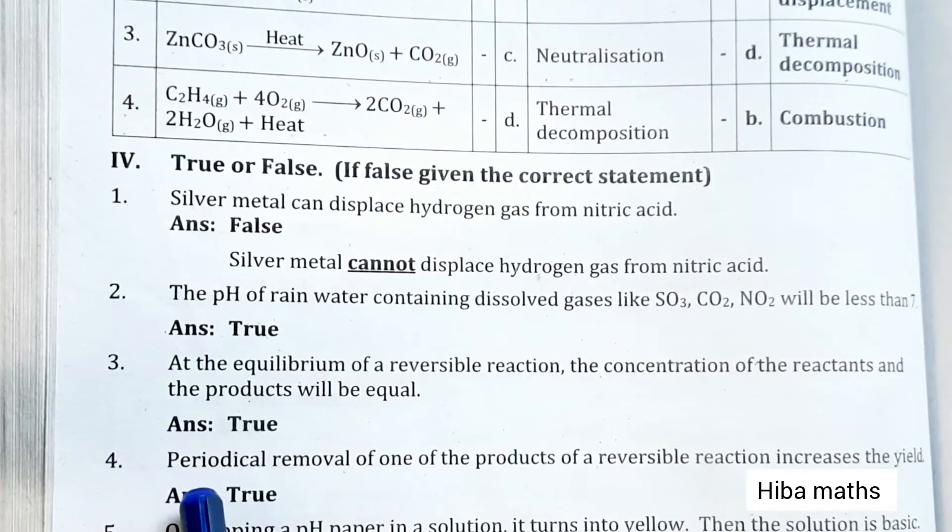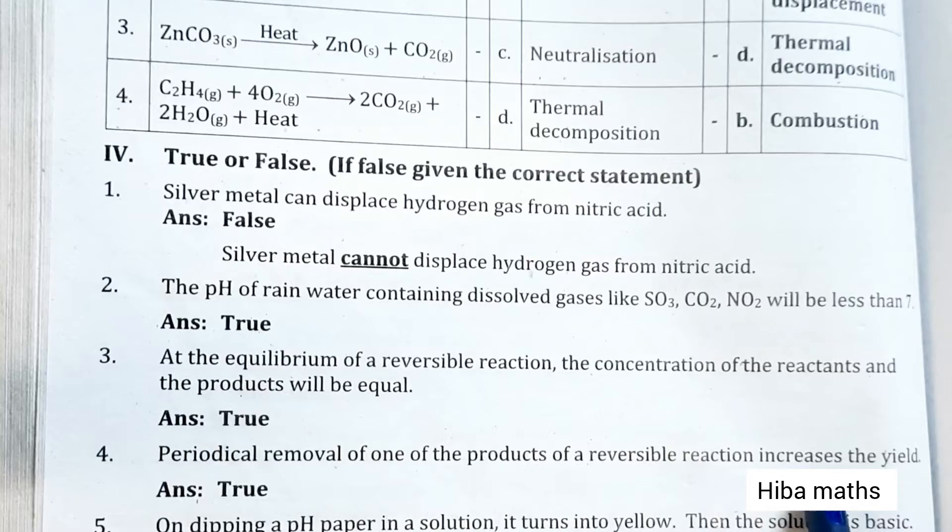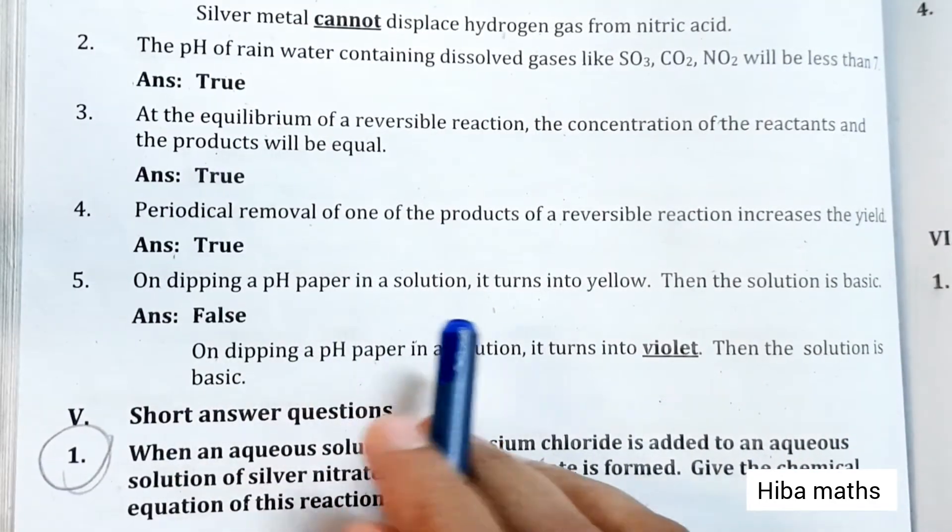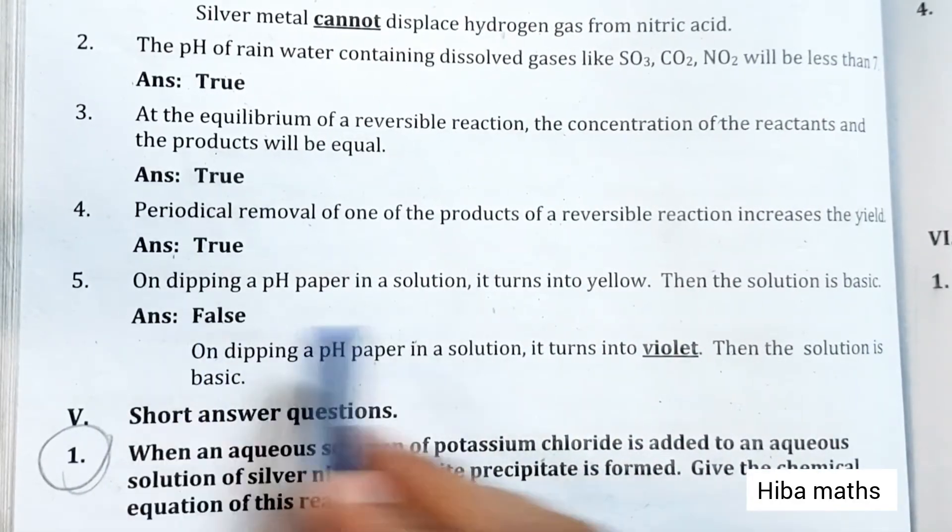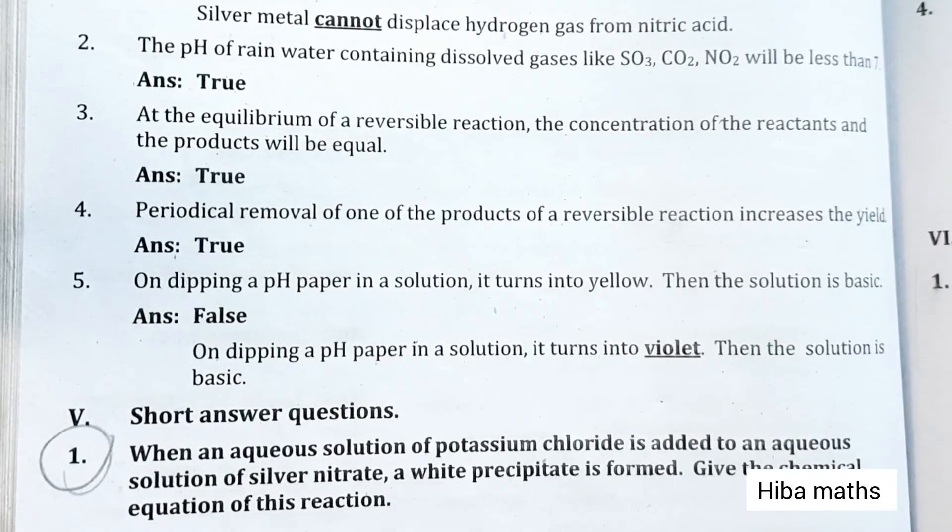Periodic removal of one of the products of reversible reaction increases the yield - True. On dipping a pH paper in a solution, it turns into yellow, then the solution is basic - False. Thank you so much for watching.